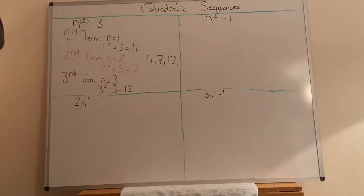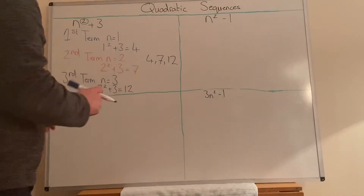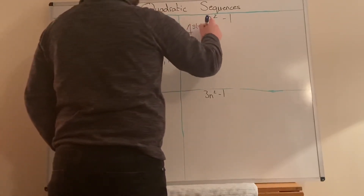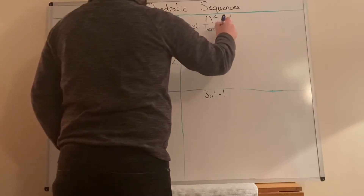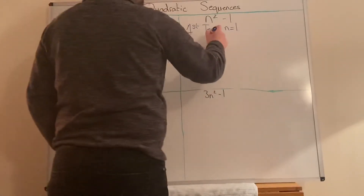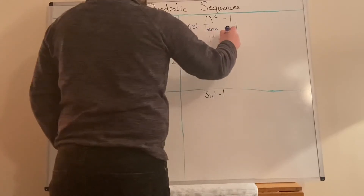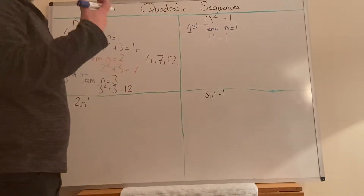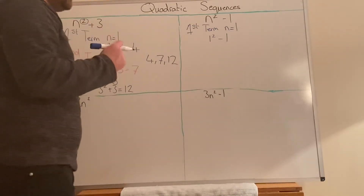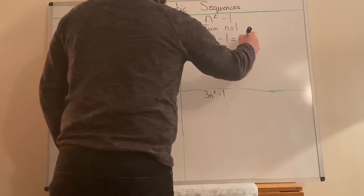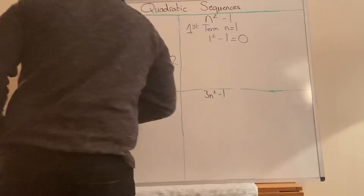So I'll look at the next one now. For the first term in the sequence, we're going to do exactly the same process. First term — n equals 1. So what we've got is 1 squared minus 1. 1 squared means 1 times 1, which is 1, not 2. So, 1 minus 1 is 0.